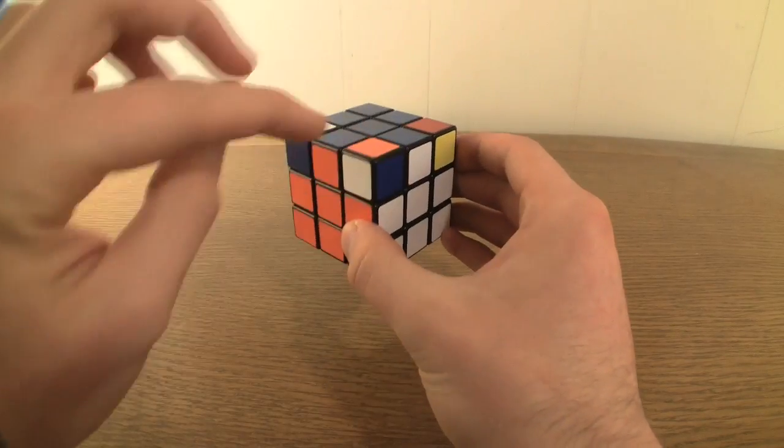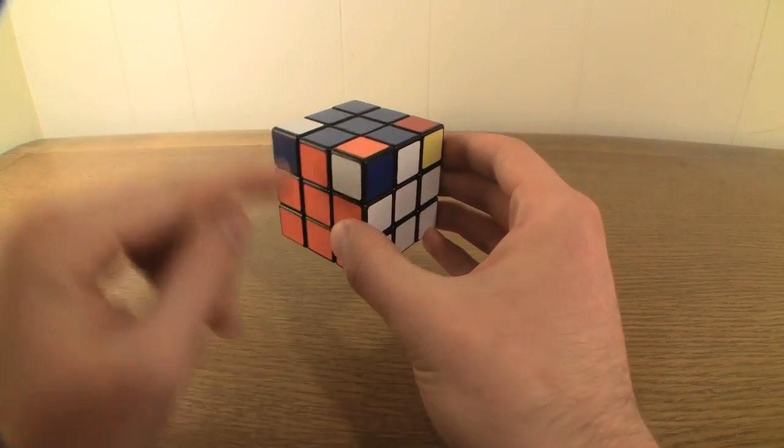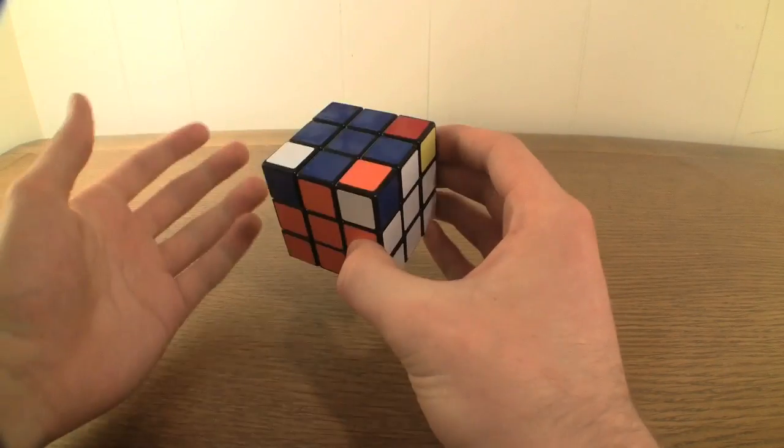For example, this orange, blue, and white corner piece is in the correct location because it is in between the orange, blue, and white sides.